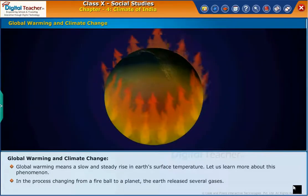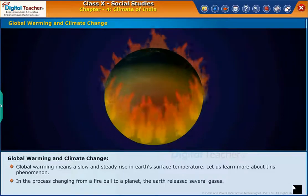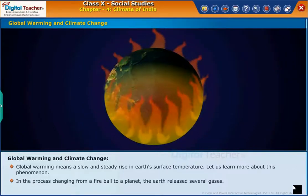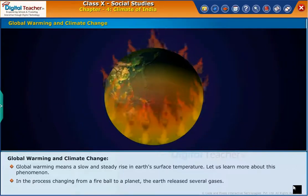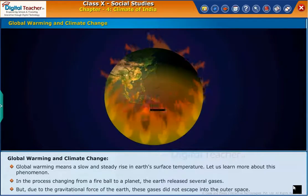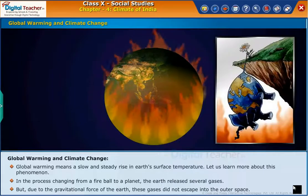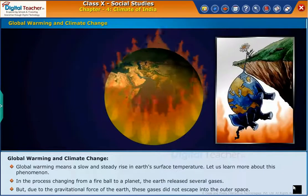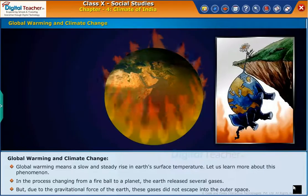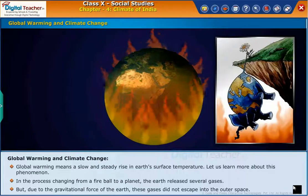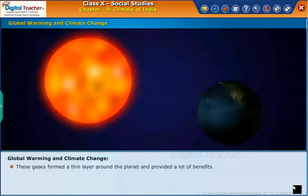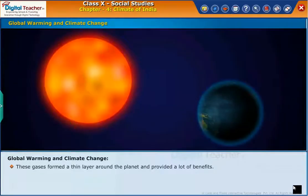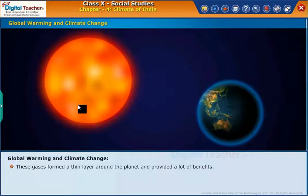In the process of changing from a fireball to a planet, the earth released several gases. But due to the gravitational force of the earth, these gases did not escape into outer space. These gases formed a thin layer around the planet and provided a lot of benefits.